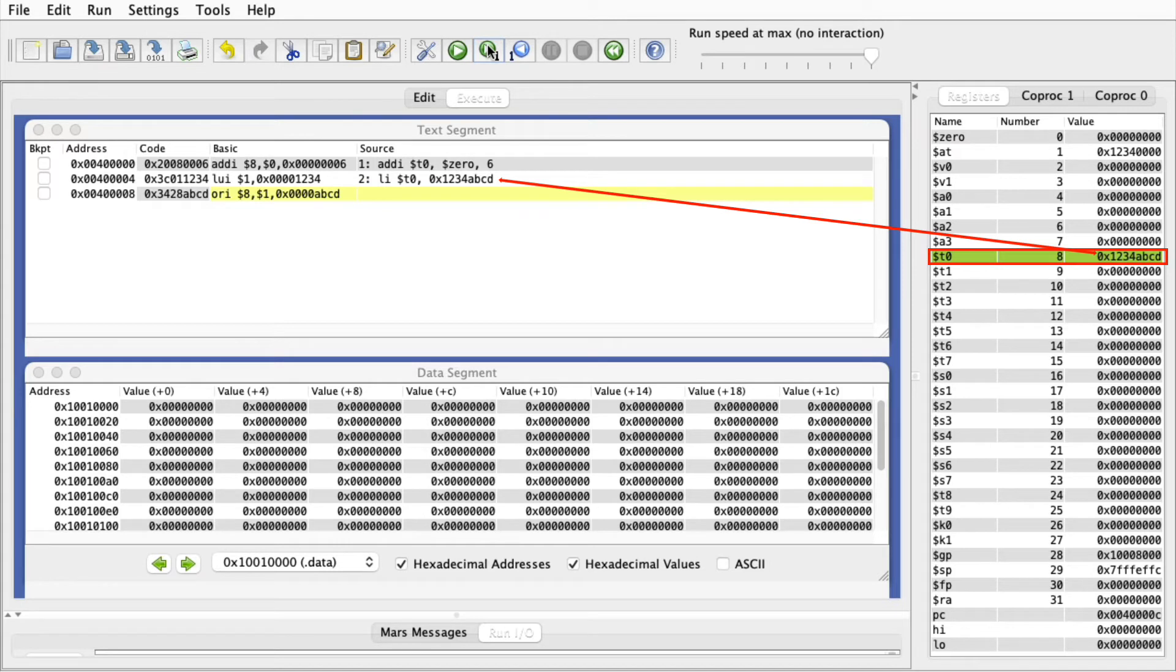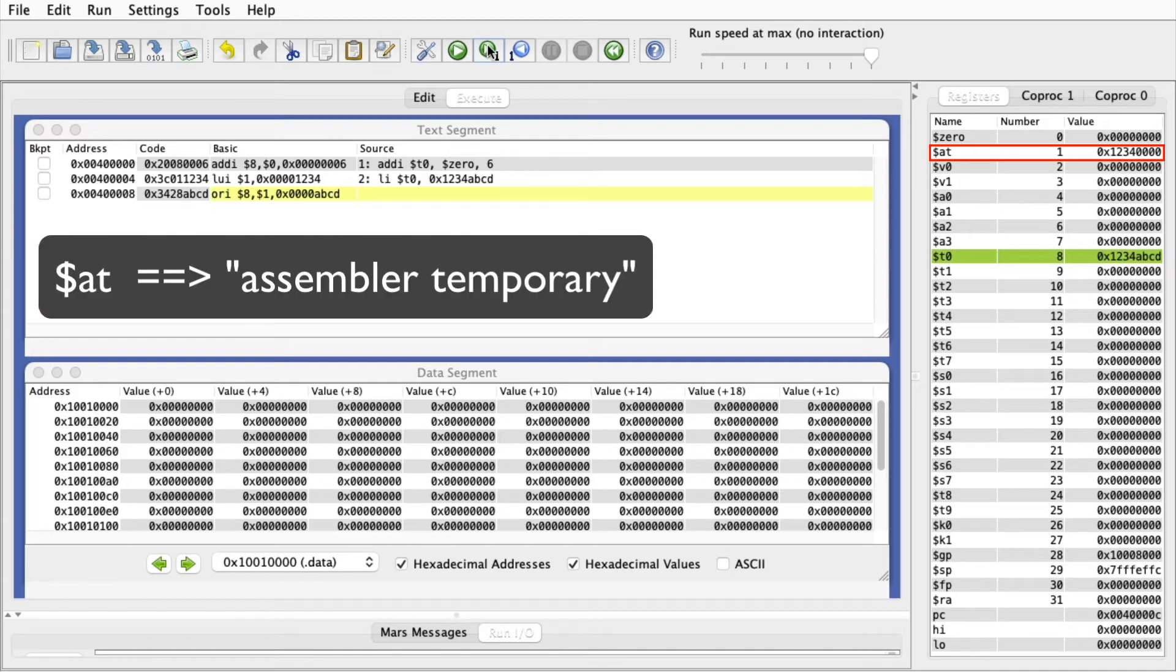Notice that the assembler chose register 1 as the destination for the LUI instruction. Register 1 is named AT, which stands for Assembler Temporary. By convention, this is the register that the assembler uses when it needs temporary space to implement a pseudo instruction. So when writing your own code, be sure to leave this register free for the assembler. Don't use it in the instructions you type. Otherwise, you might end up with a bug when your data gets clobbered.